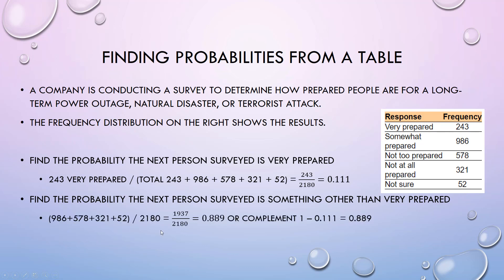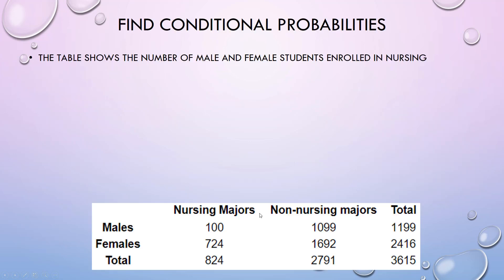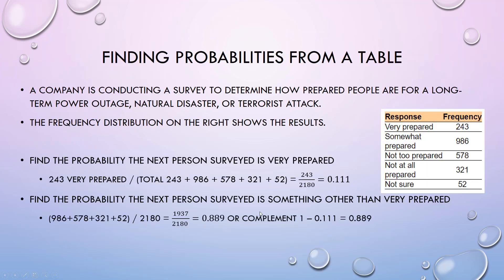Or this is where if you understand the complement, it's just faster. Because the probability they are very prepared is 0.111, the probability they are not prepared would be 1 minus that value. That's the complement. Why do we do 1 minus? Because all probabilities have to add to 1.